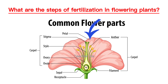We have the petal, which is brightly colored to attract pollinators, and then we have the sepal and the receptacle. You can check their functions in the previous videos in Let's Learn Science.